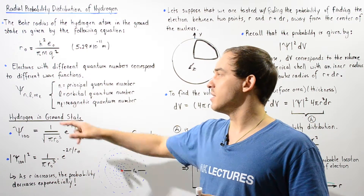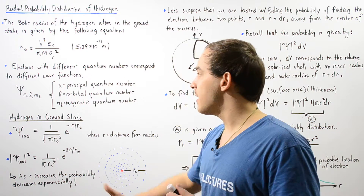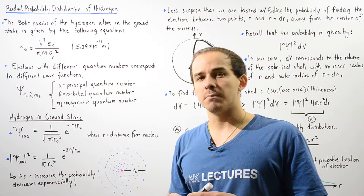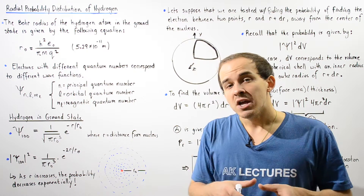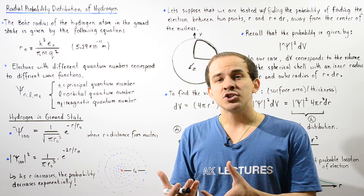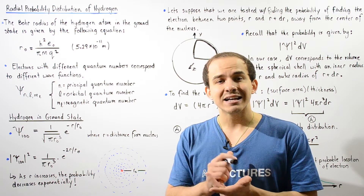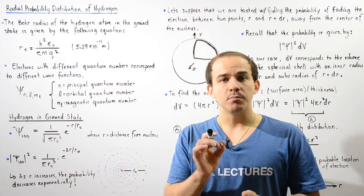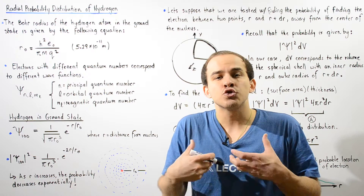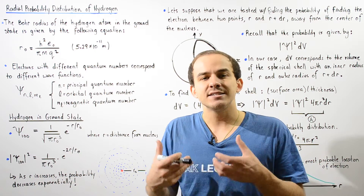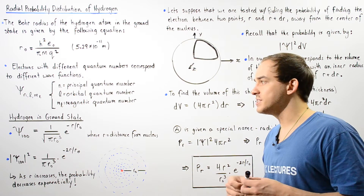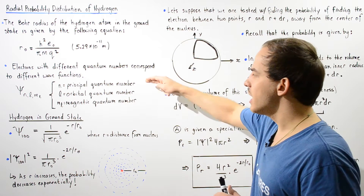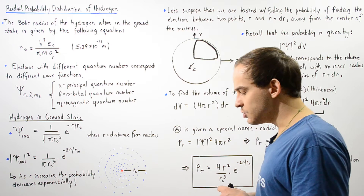We have to specify the principal quantum number n, the orbital quantum number l, and the magnetic quantum number m-l. The fourth quantum number — the spin quantum number — does not determine the orientation, size, or position of our wave function. It is an intrinsic property of the electron and does not determine the shape, size, or orientation of the wave function.